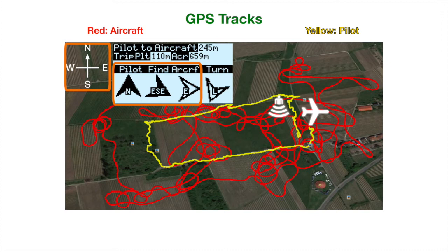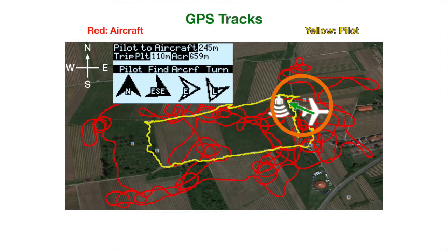The direction from the pilot to the aircraft, also known as the fine directions. Headings and directions are arrows relative to north. Direction from the aircraft to the pilot, also known as the home position. This display is off by default, since it's basically the opposite direction of the fine direction — there's no need to have both showing at the same time.